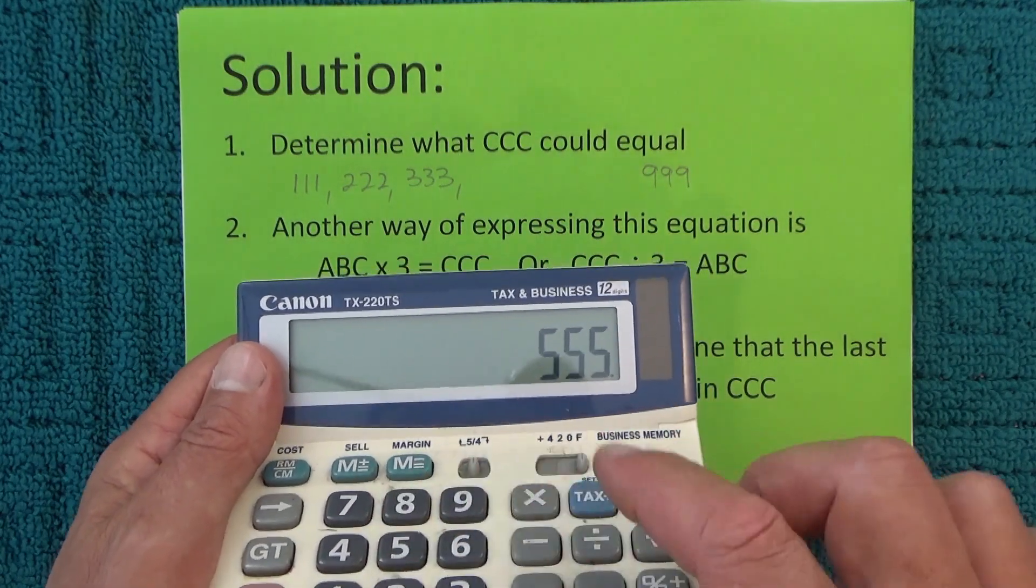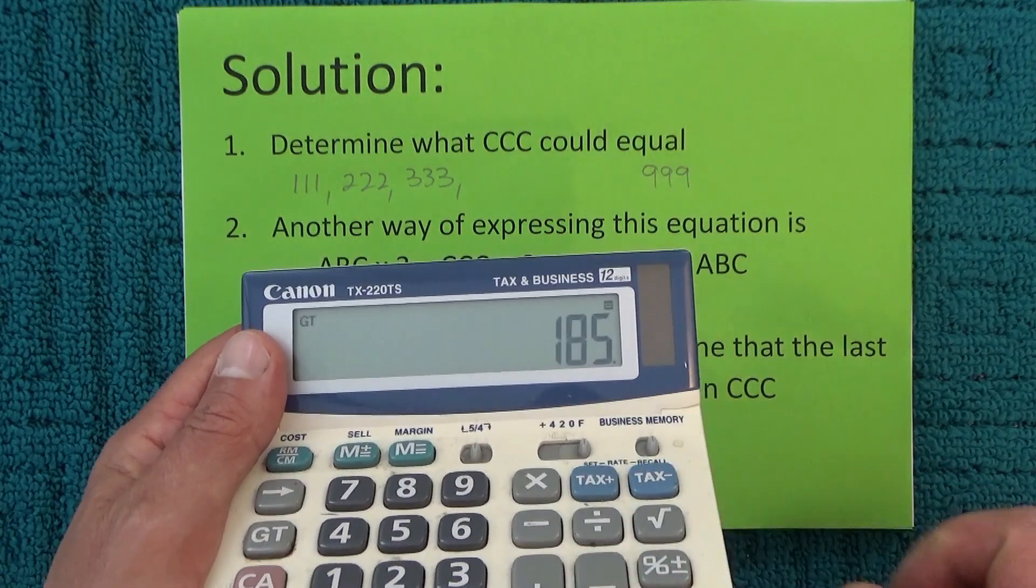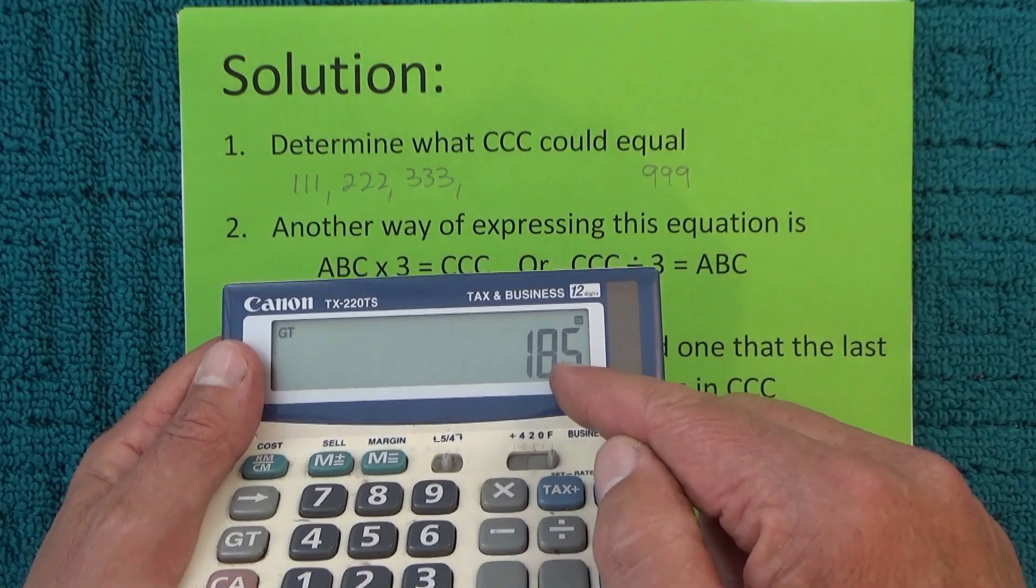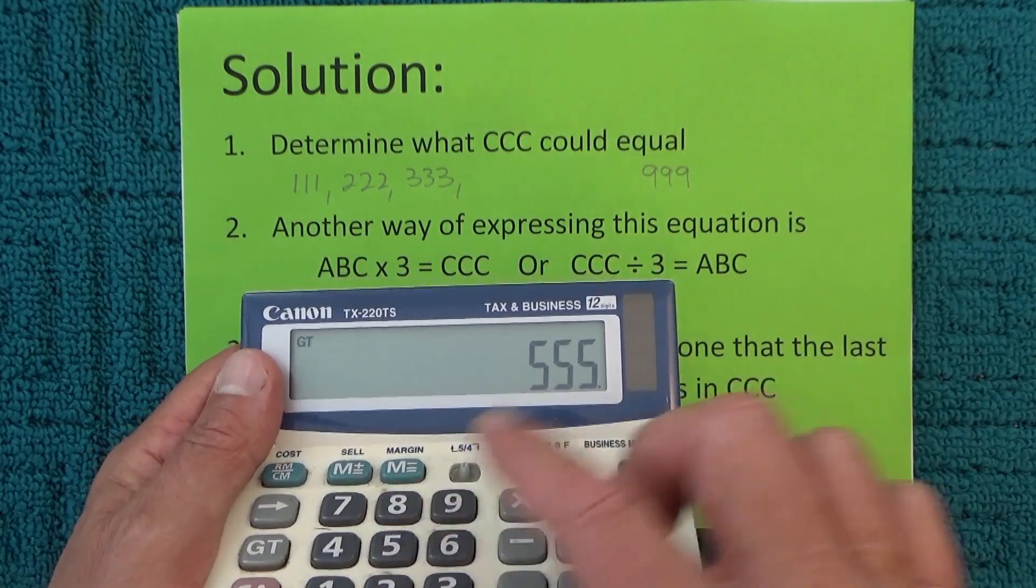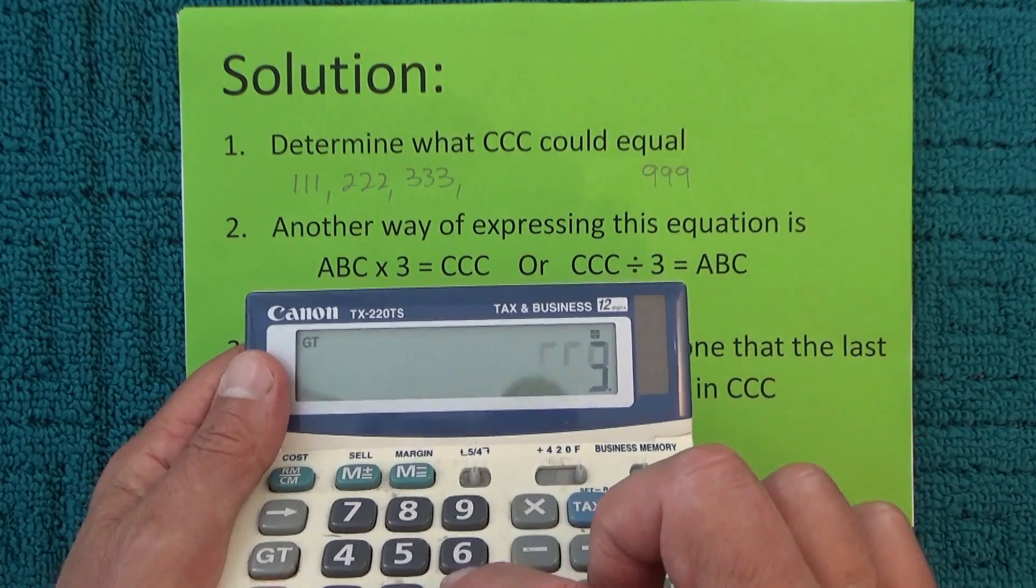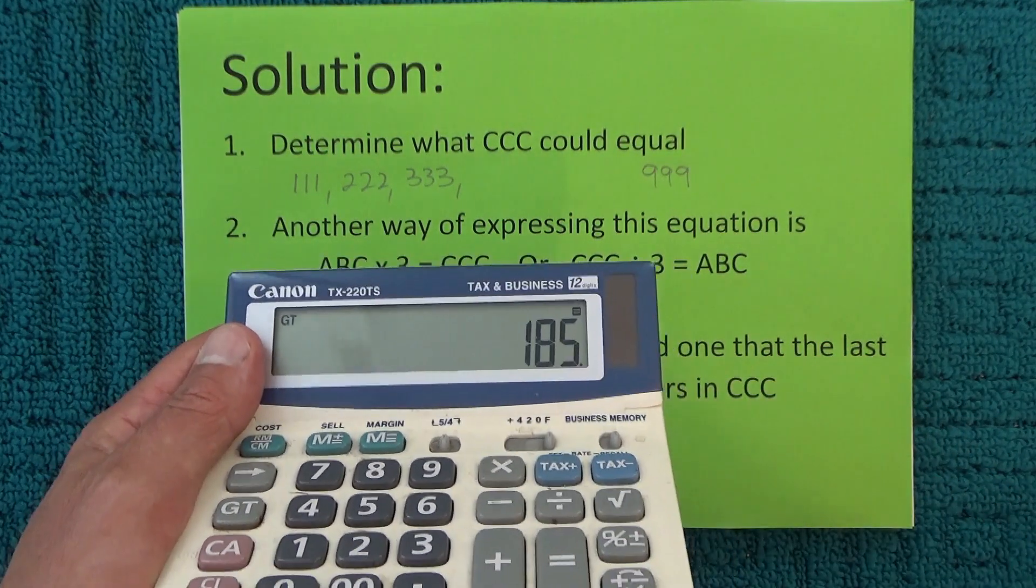Then 555 divided by 3 gives us 185. You can see that 555 ÷ 3 = 185.